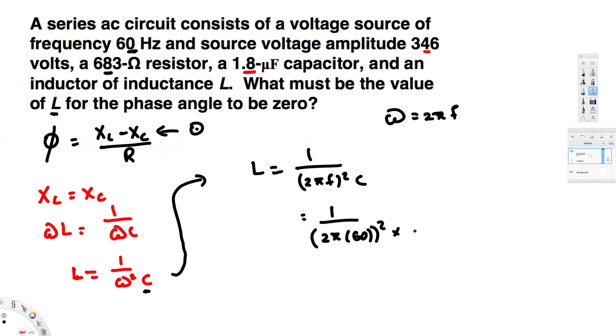That is 1.8 microfarad, so 1.8 × 10⁻⁶ farad. If you calculate this value, you will get 3.91 henries. So this is the inductance we need to have in order for the phase angle to be zero. That's how we do this kind of problem. I hope this helps, thanks for watching.